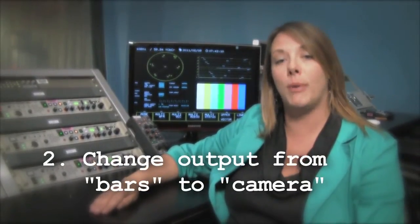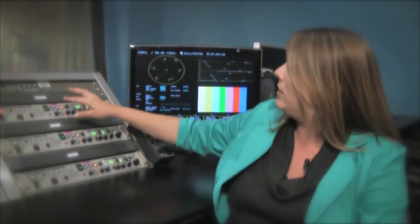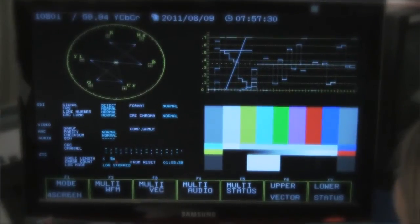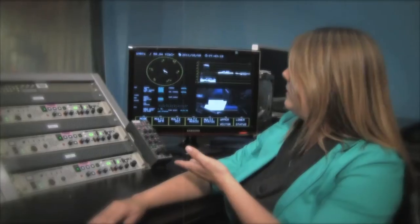The next step you want to do is change the output from bars to camera. All you need to do is press the bars button and you will switch between bars to camera. Now we're able to see what we see in the control room right here, which is exactly what we're seeing down in the studio.